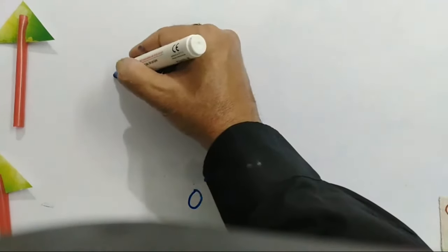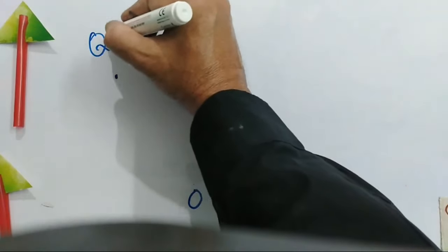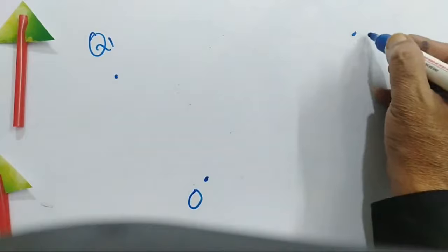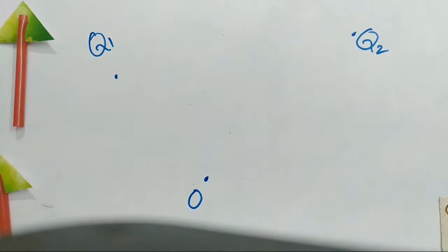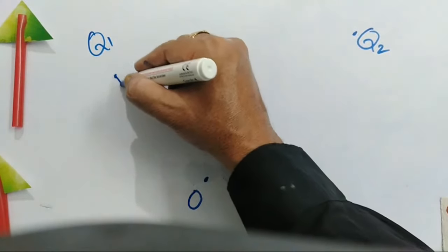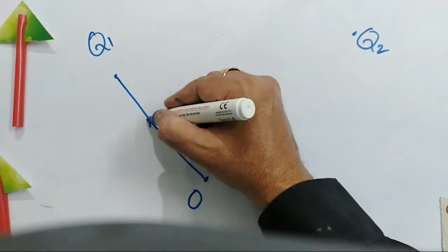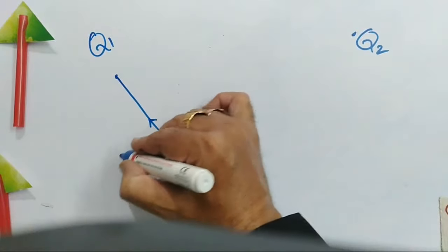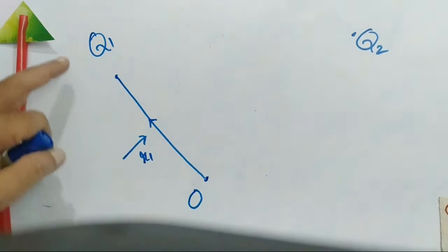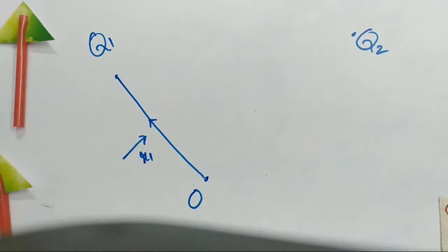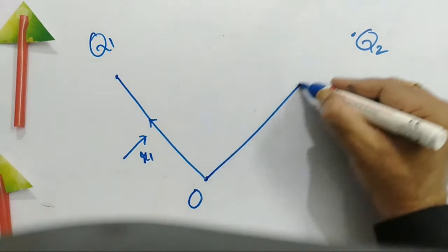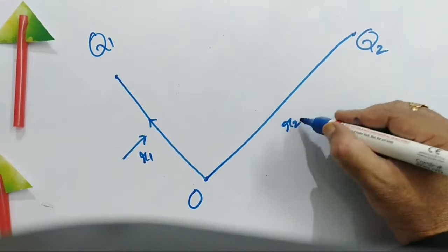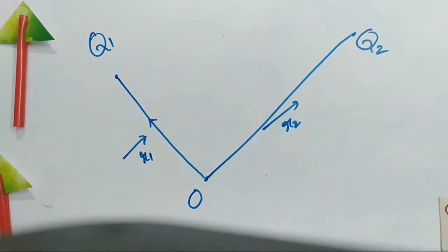Let us set up a reference point. We have kept one charge here — let us say Q1 — and one charge here — let us name it Q2. The position vector of Q1 from origin O is r1 bar, and the position vector of Q2 from origin O is r2 bar.